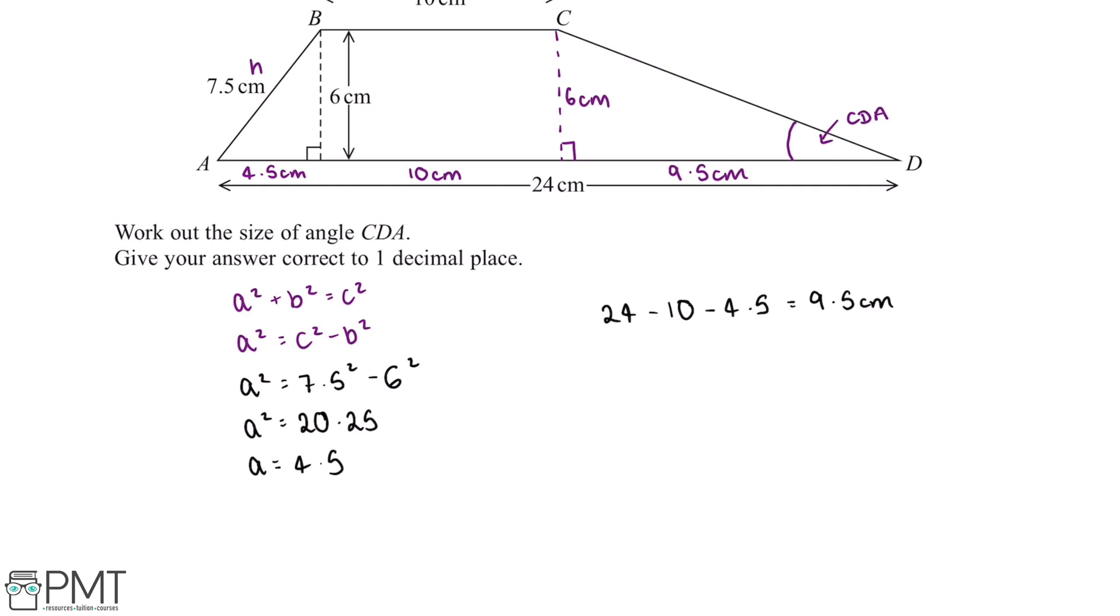So the hypotenuse is always the longest side, and then the side which is opposite to this angle will be this side here. So we can label this the opposite side. And then the adjacent side is the base of this triangle.